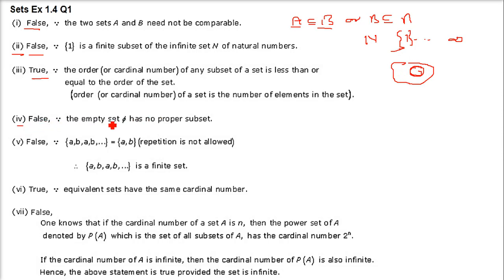Fourth statement: every set has a proper subset. This is false because we have an empty set called phi, and it has no proper subset.